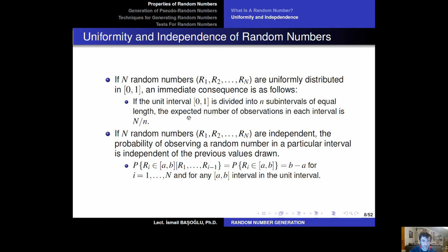The independence property states that if the random numbers generated in a sequence are independent, then the probability of observing a random number in a particular interval is independent of the previous values generated. The probability of the i-th random number to be between a and b — where [a, b] is a subinterval within the unit interval — given all previous random numbers are known, must equal the probability without any knowledge of previous values. The probability of the next number being between a and b will always be b minus a.